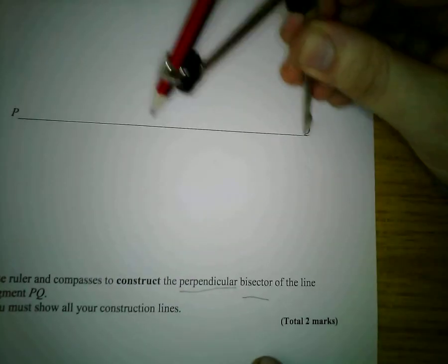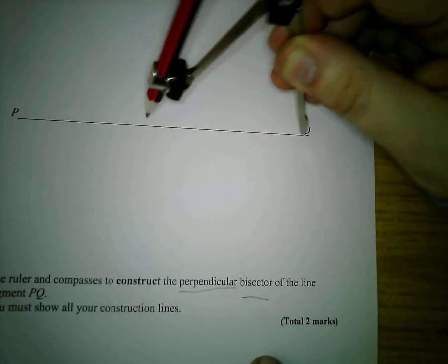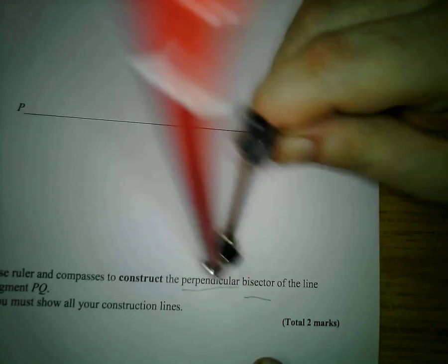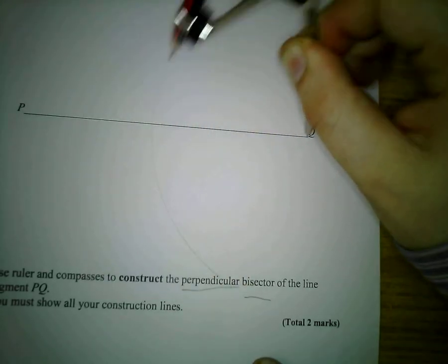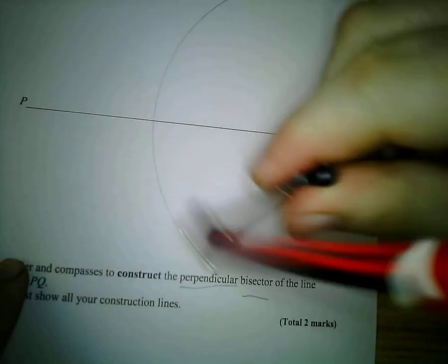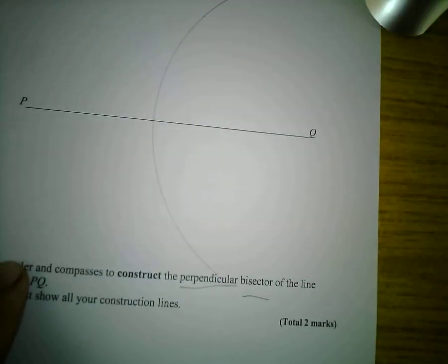Right, what I'm going to do now is I am going to draw a big arc from Q like so. Go over that again. Okay, so there's my arc from Q.